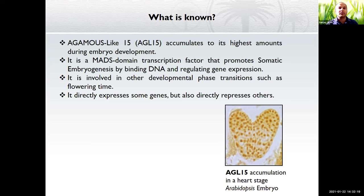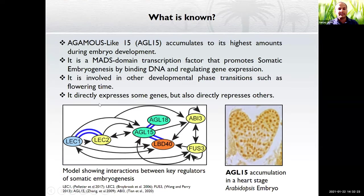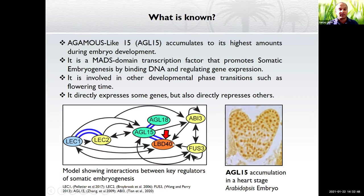AGL15 has been studied and we know where it binds and what genes it regulates. Here is a simple model of gene regulatory networks — black arrows show direct regulators and blue shows protein-protein interactions. LEC1, LEC2, ABI3, and FUSCA3 are key regulators of embryo identity genes. Interestingly, all the arrows in one way or another are directing to my protein of interest — my research topic, LBD40. We don't know what LBD40 does or where it regulates.